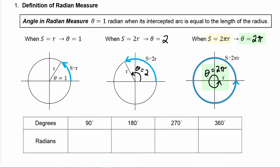Now that means 360 degrees is going to be equivalent to 2π in radian measure.